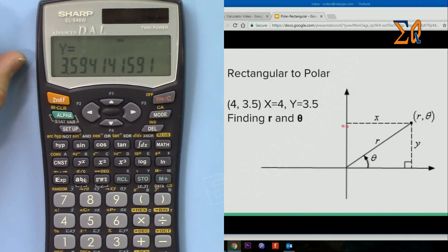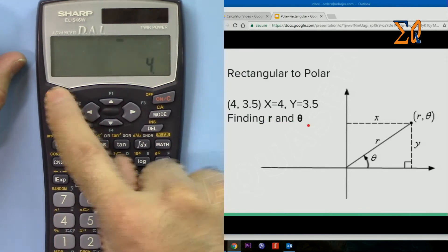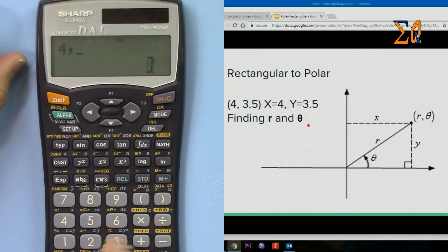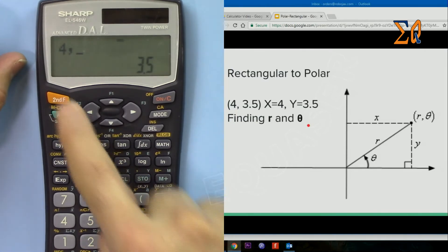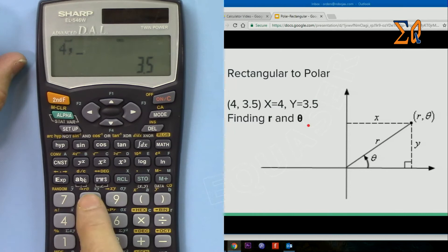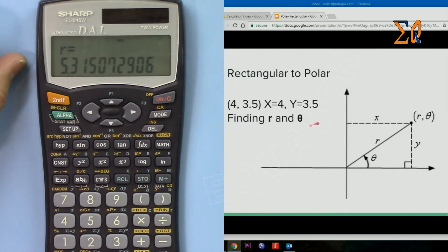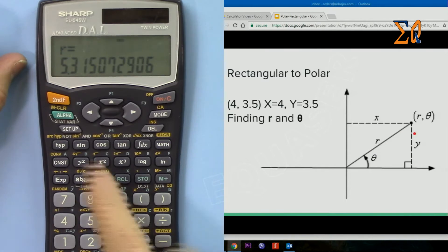Now with X equals 4 and Y is 3.5, we want to find r and theta. Clear. So 4, second function comma, 3.5, and then this time press this r and theta. You get r, this magnitude or length of the radius is 5.53, and then recall Y, so the theta is 41.18 degrees.